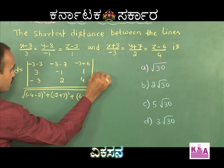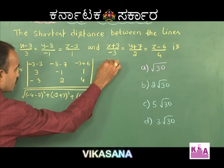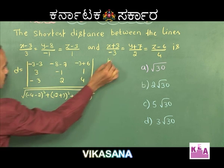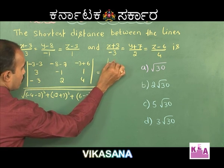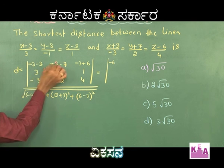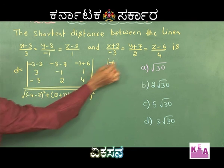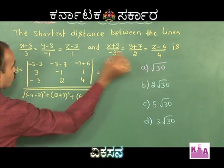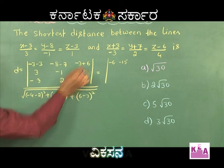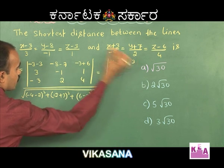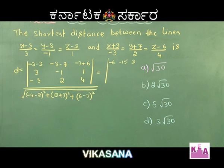Simplifying: −3−3 = −6, −8−7 = −15, 6−3 = 3.